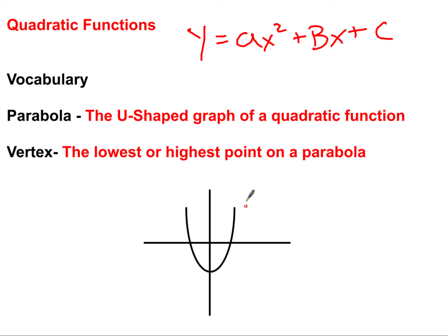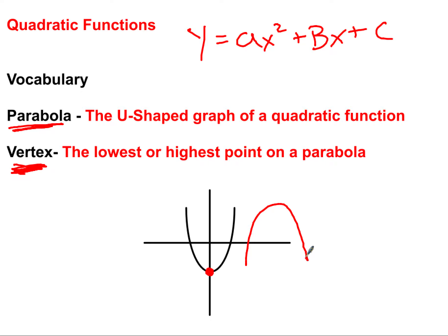A parabola is a u-shaped graph. It can be right-side up, making a U shape, or it can be upside down, kind of like an n. Every quadratic function makes a u-shaped graph called a parabola. The vertex is another vocabulary term — it's the lowest or highest point on a parabola. For an upward parabola, the vertex is the lowest point.